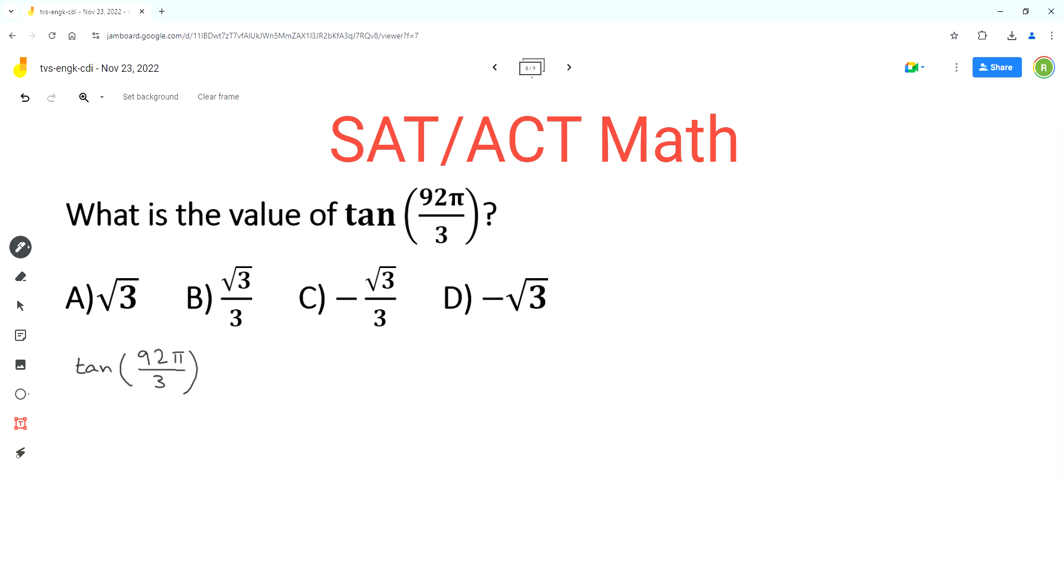We should change the fraction 92 over 3 into a mixed form. 92 over 3 is an improper fraction. We want to change it to a mixed number or mixed number fraction.